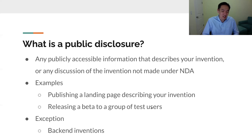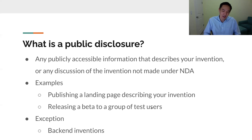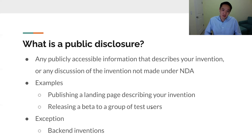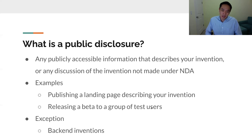All of those actions — if someone is not obligated to keep it a secret, and they could see your invention and figure out how it works — then that is considered a public disclosure, and it starts a one-year clock within which you have to file a patent.